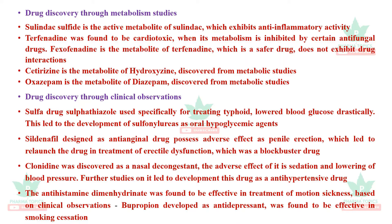Drug discovery through metabolism: metabolites are studied as potential drug candidates. A classic example is the antihistamine hydroxyzine, which is cardiotoxic, but its metabolite cetirizine is the best anti-allergic drug. Cetirizine is a hydroxyzine metabolite; hydroxyzine is a first-generation H1 antihistamine that is highly sedative, while cetirizine is less sedative with very strong anti-allergic properties. Another example: diazepam's metabolite is oxazepam, a short-acting benzodiazepine.